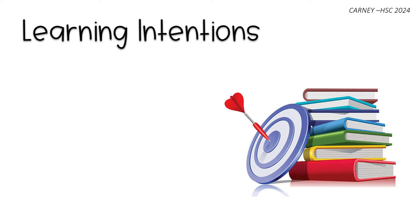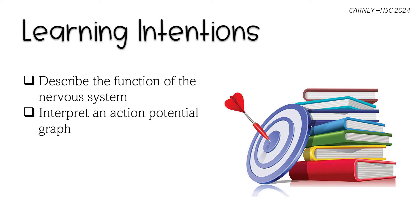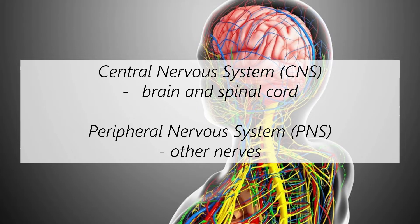The learning intentions are to describe the function of the nervous system, interpret an action potential graph, and describe the function of the endocrine system. The nervous system has two main parts.